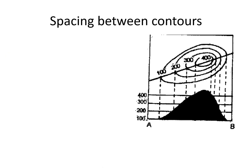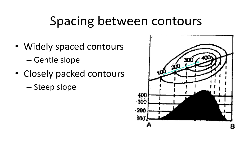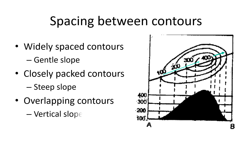When contour lines are drawn widely spaced, they indicate that the land is gently sloping. If the contour lines are closely packed, they indicate a steep slope. Please remember that contour lines do not intersect each other. But if they overlap each other — one on top of another — that will indicate a very steep slope or almost a vertical slope.